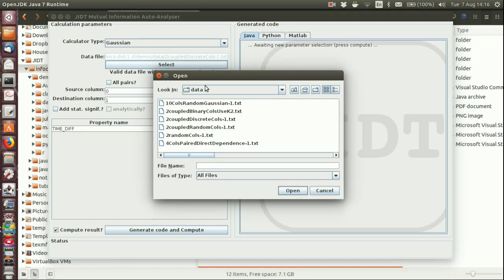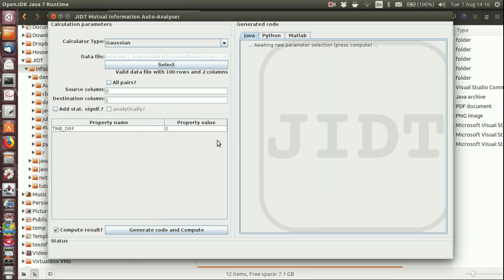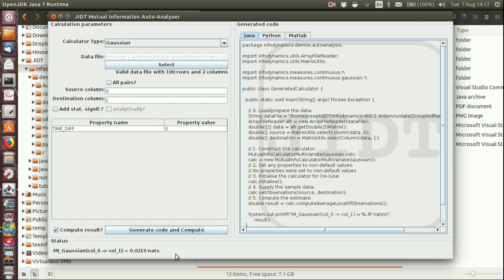We'll select one of the two coupled random coles data sets from those packaged with JADT which has been validated here. We're going to compute the mutual information from source zero to destination one. Let's compute the result and we get a result of 0.0219 nats which appears consistent with zero. Again we'll investigate what I mean by consistent with zero in a later session.